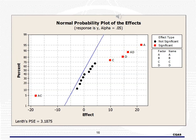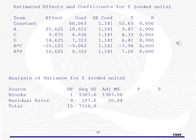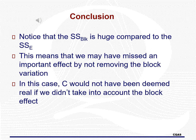Notice from the normal probability plot that main effects A, C, and D are significant, and two-way interactions AC and AD may be significant. After we reduce and get the ANOVA model, we see those terms are indeed statistically significant. The fact that the sums of squares for block is large compared to the sums of squares for error is an indication that had we not blocked, our error would be inflated.